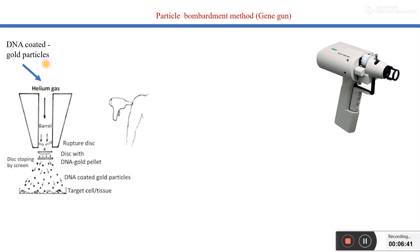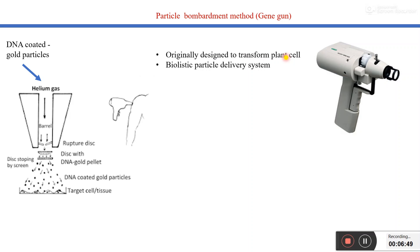Through this gene gun method, we can insert our gene of interest into our target cell. Originally it was designed to transform plant cells. It is also known as the biolistic particle delivery system because in this process the gene of interest is inserted inside the target cell by micro-projectile bombardment — that's why it is called the biolistic particle delivery system.